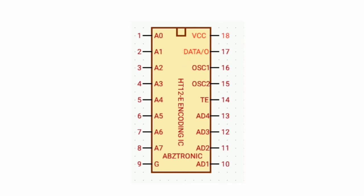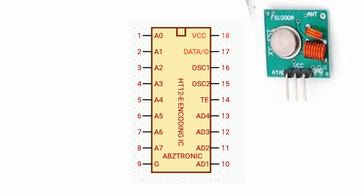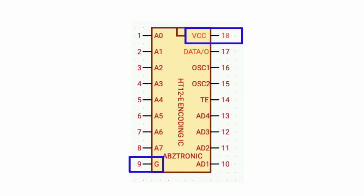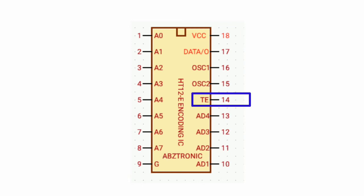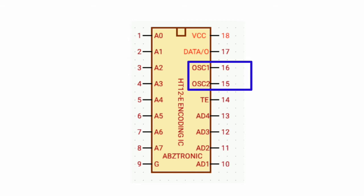Then it is modulated and transmitted by using the RF transmitter module. Pin 9 is the ground and pin 18 is VCC. Pin 14 is the transmission enable, and to enable the transmission it must be connected to the ground, then the transmission is ready. One of the advantages of both ICs is easy to use due to the internal oscillator, by just connecting the resistor to both pin 15 and 16, while pin 17 is the data output.